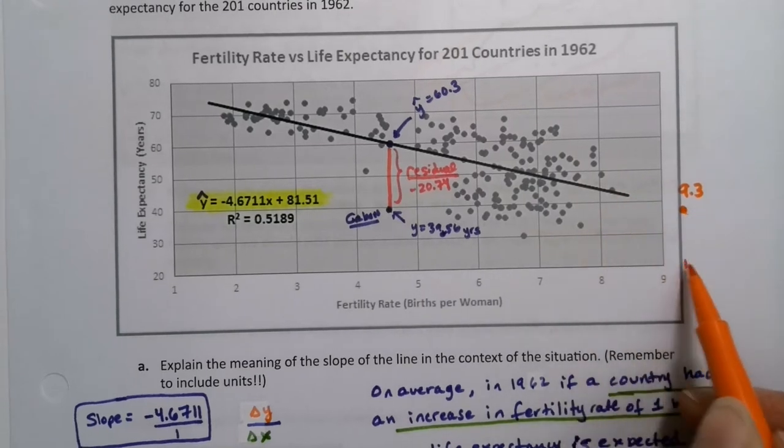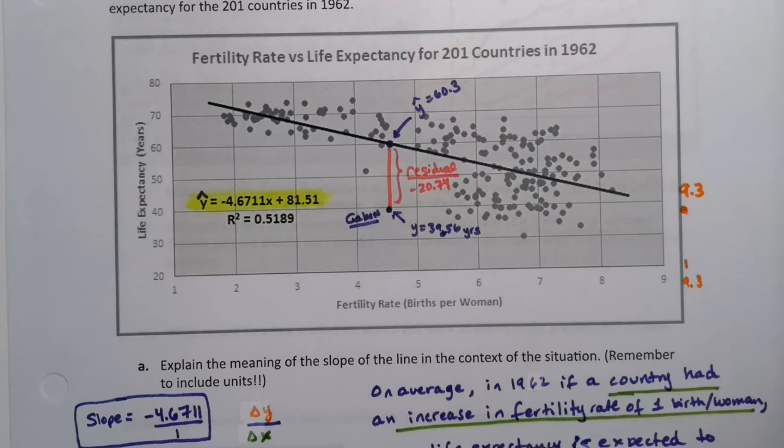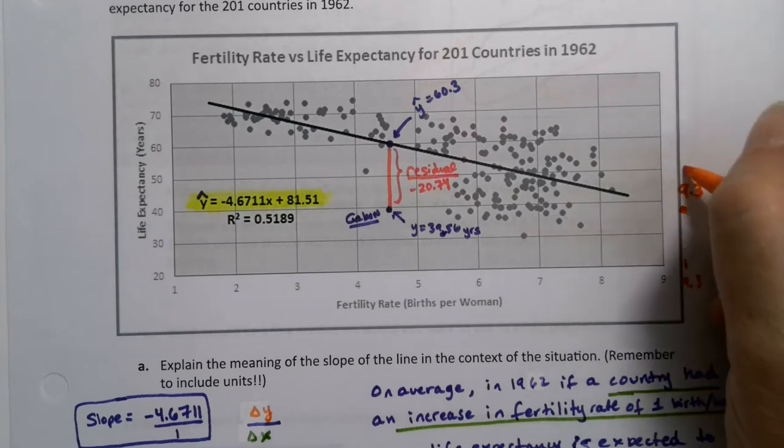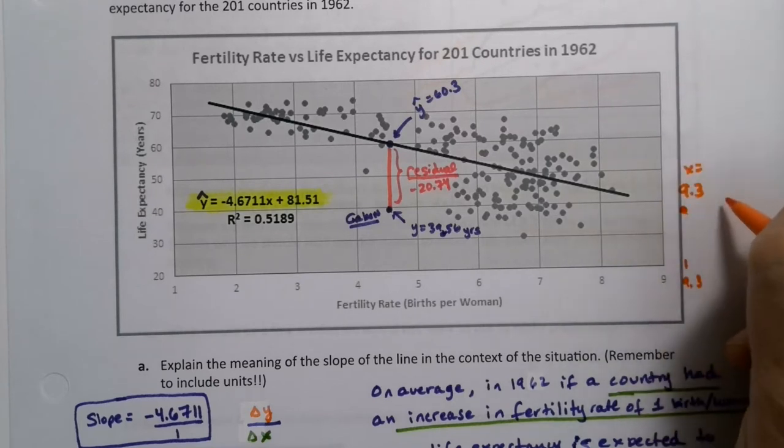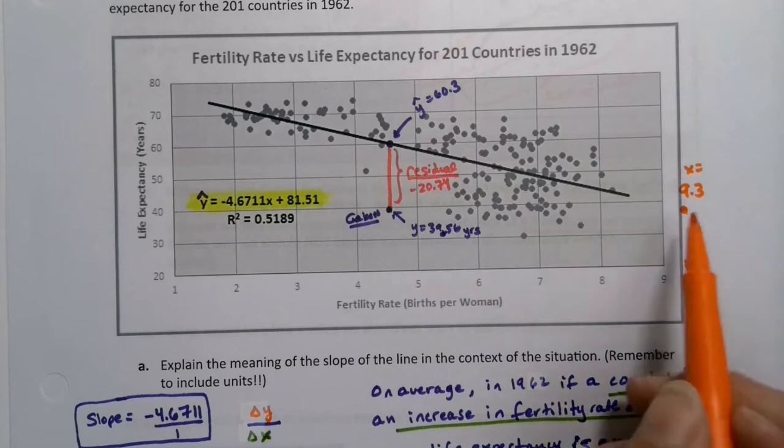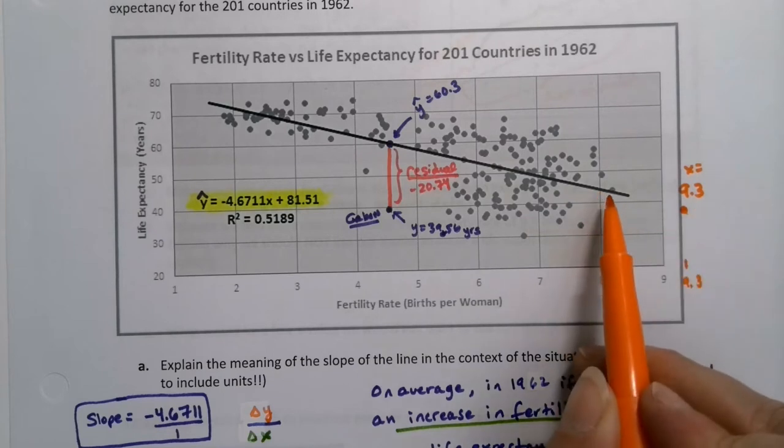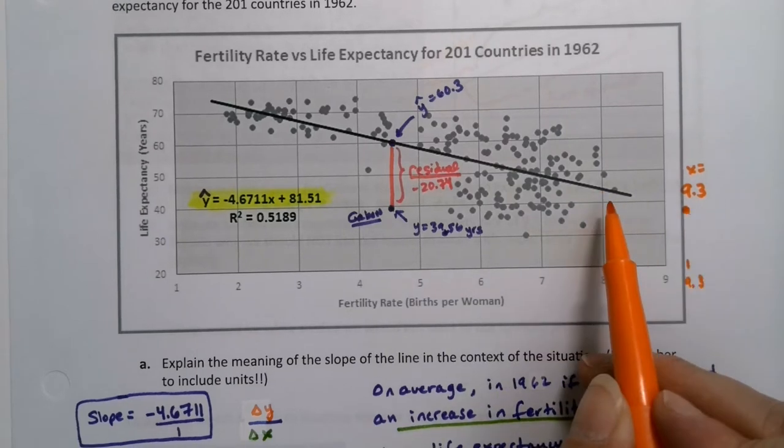So 9.3 is right out here as an x value. And you want no part of making some kind of prediction as to what that y value is. So this would be x equals 9.3. We don't know what the y is. But that's way far away from our actual known data points. So that's outside the scope of the model.